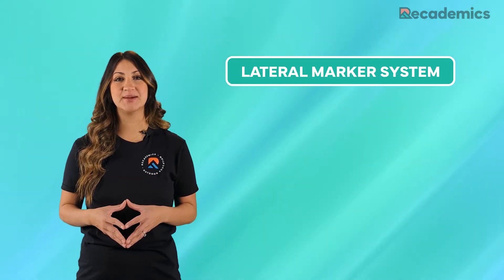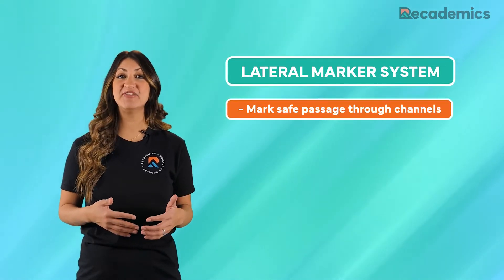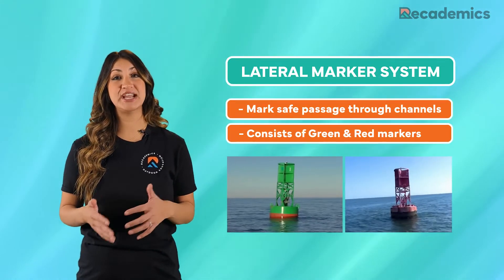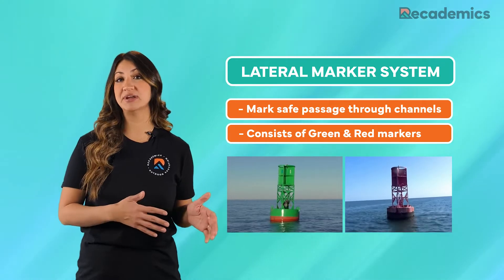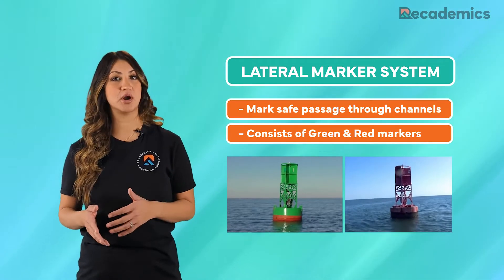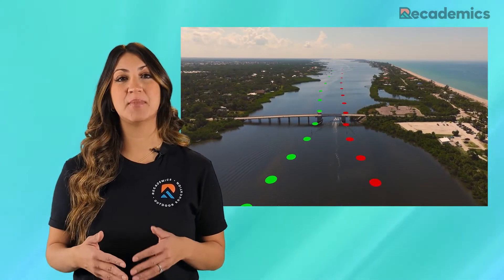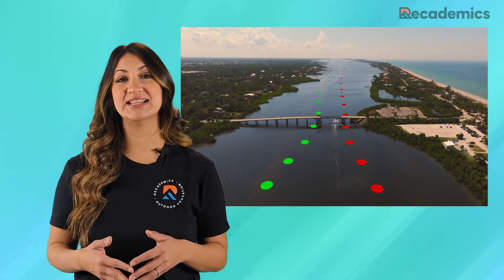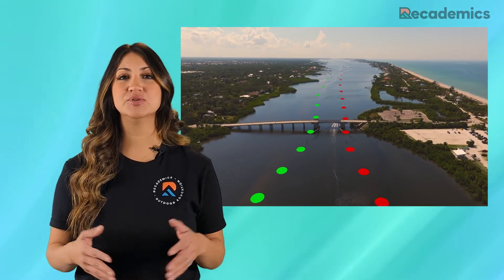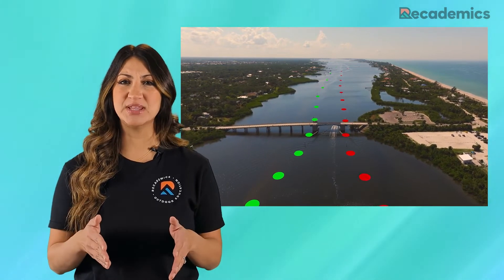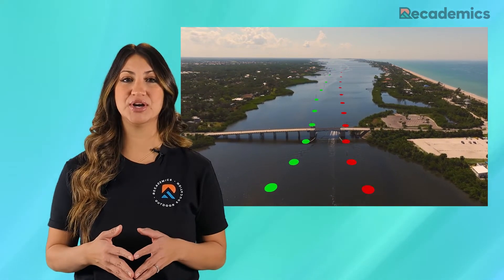First, we have the Lateral Marker System. This system is designed to mark safe passage through channels, and it consists of primarily green and red markers. These green and red markers indicate the safe edges of the waterway, so stay in between them and don't venture outside of the markers.